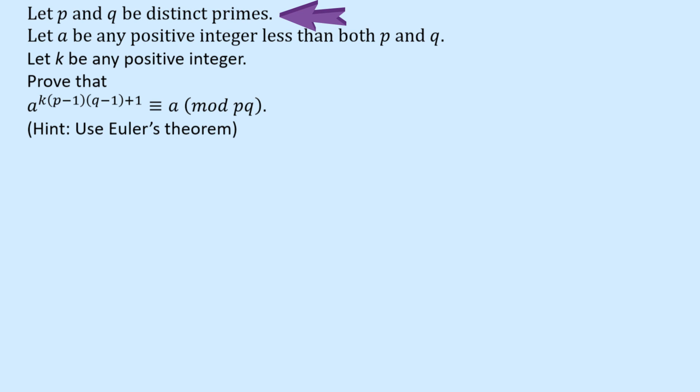So we've got P and Q are distinct or different primes. You might want to think of them as being like 7 and 11. Now A is any positive integer that's less than both P and Q, those two primes. And K is any positive integer. And we have to prove this ugly thing here. We're told the hint is to use Euler's theorem.